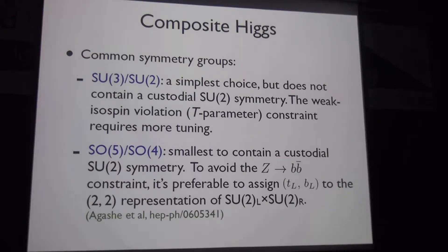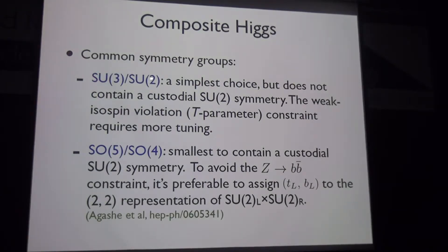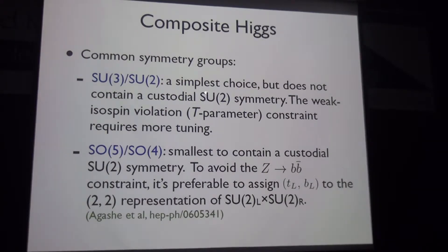Common symmetry groups in composite Higgs models include SU(3) broken to SU(2), which produces five Goldstone bosons, four of which form an SU(2) doublet. However, this choice lacks a custodial SU(2) symmetry, leading to strong constraints from weak isospin violation. As a result, the symmetry breaking scale F must be quite high, requiring more fine tuning.